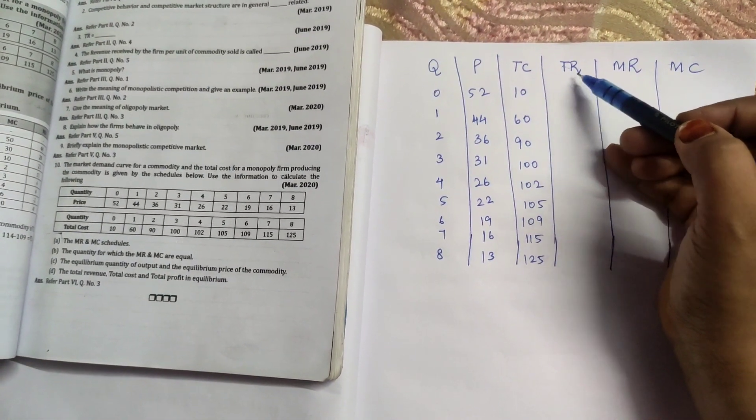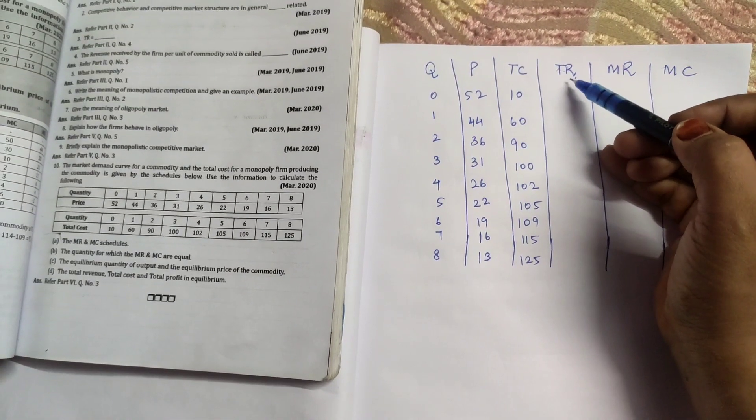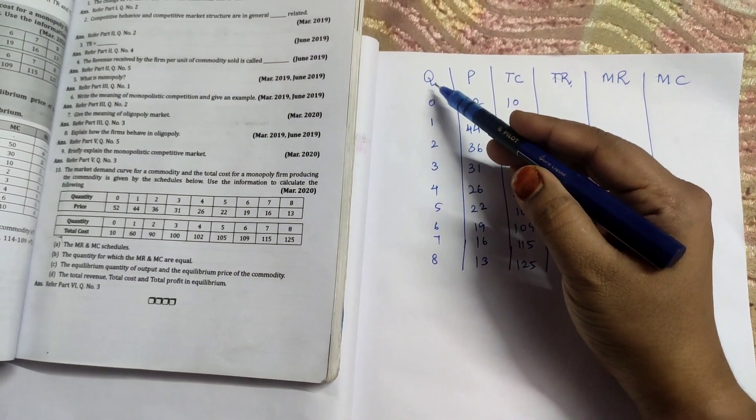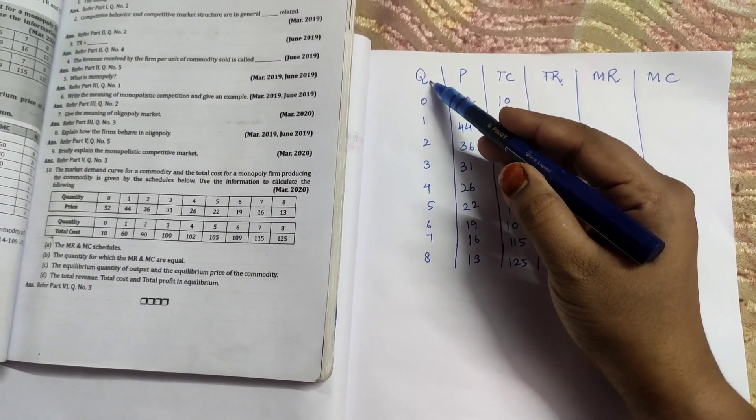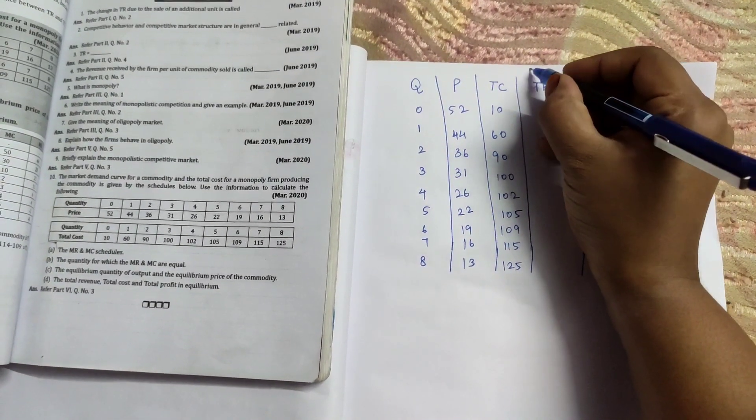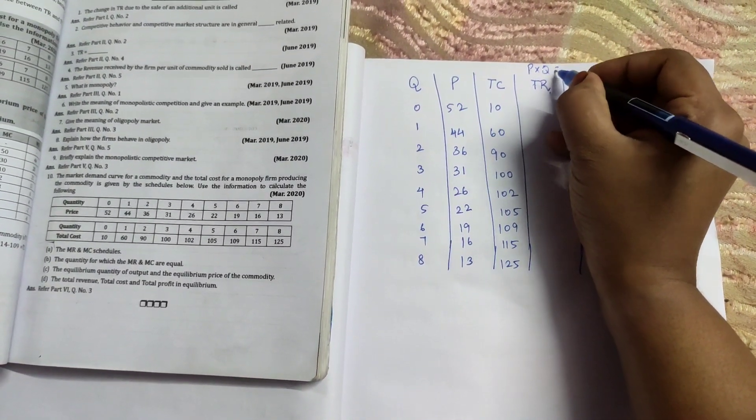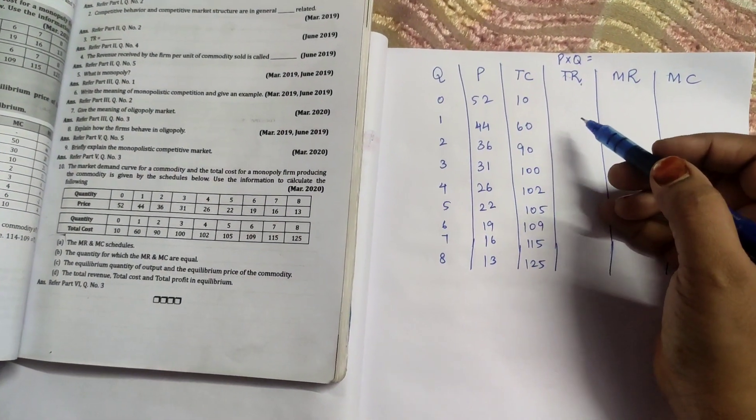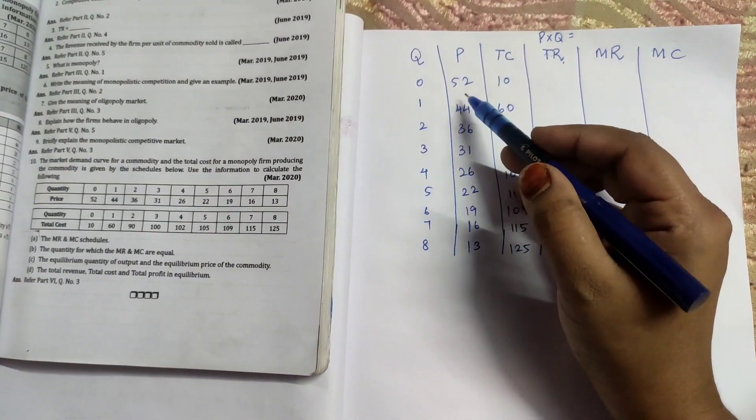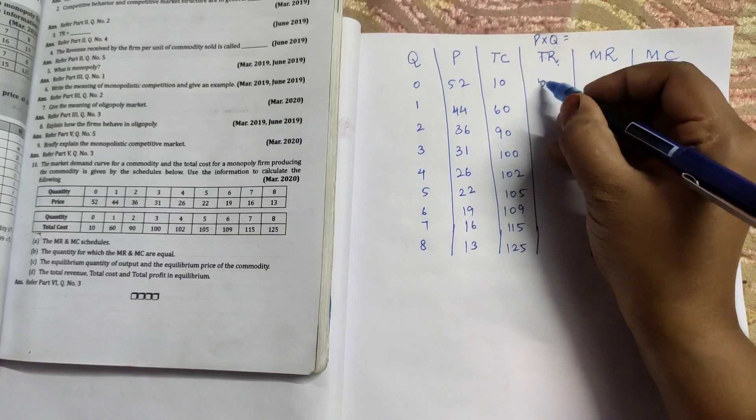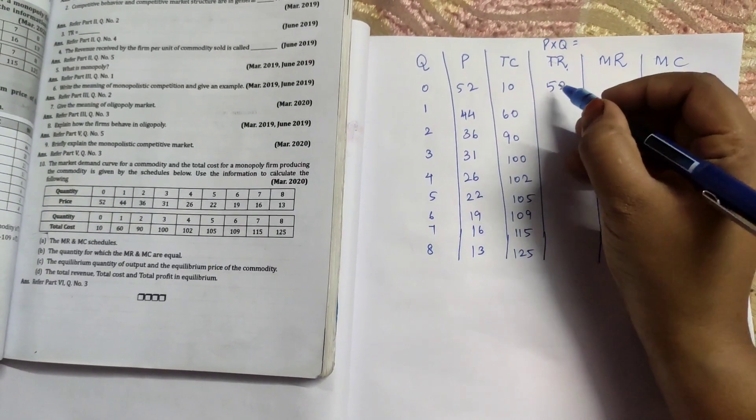Now we have as it is taken down the total cost also. Now we need to calculate TR. So to calculate total revenue we need to multiply quantity into price. So price into quantity is equals to total revenue.